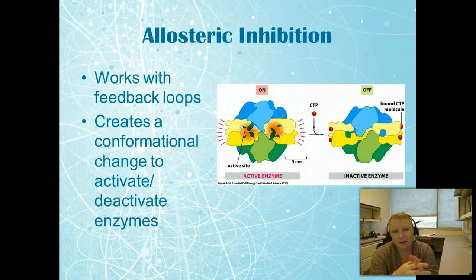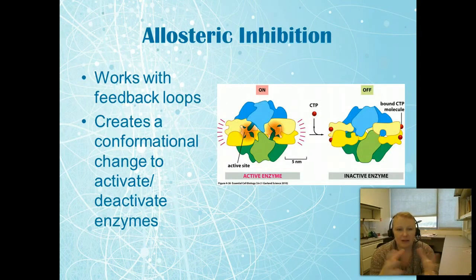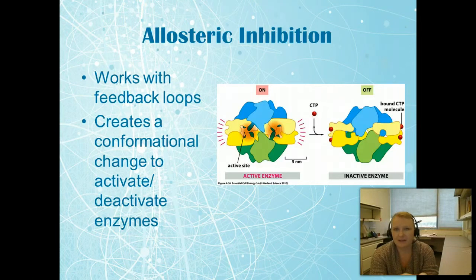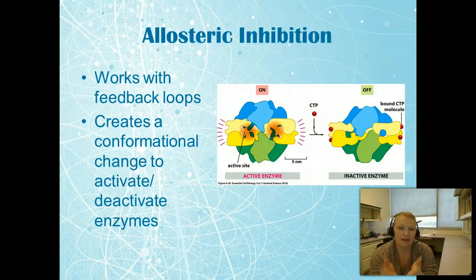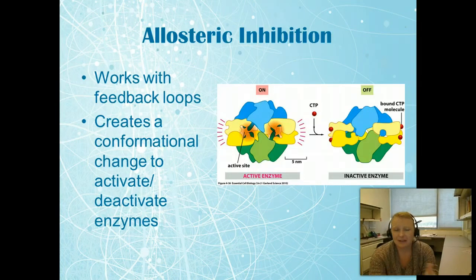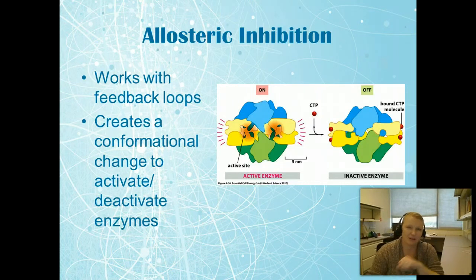Allosteric inhibition works with feedback loops. This is where the cell will bind to an enzyme at an allosteric site, changing its conformational shape so that the active site is no longer available. You can see here how CTP binds to the allosteric sites, which turns off that active site so the substrate can't bind — this deactivates the enzyme. This is a way feedback loops work, though it can also work independently, but it's almost always associated with a feedback loop.